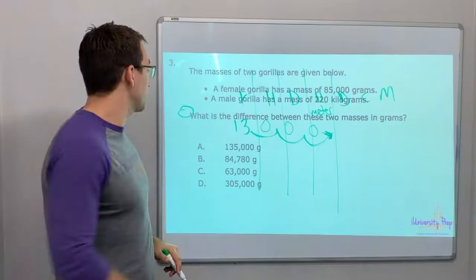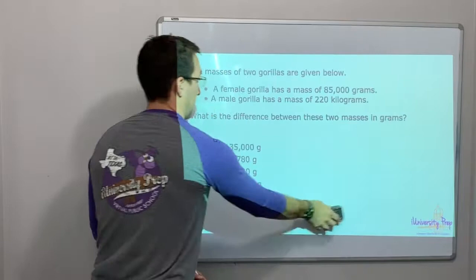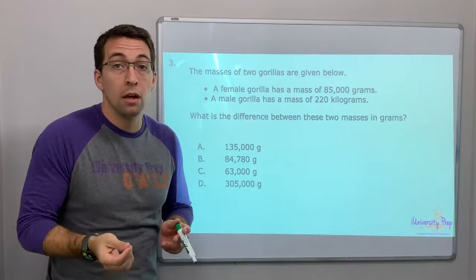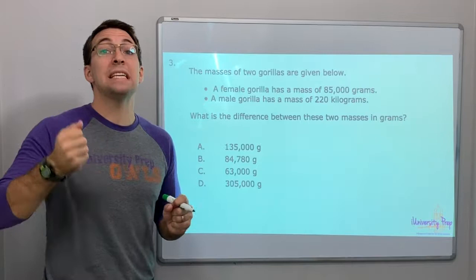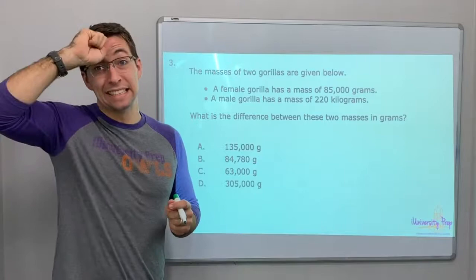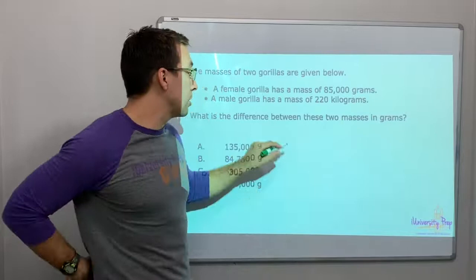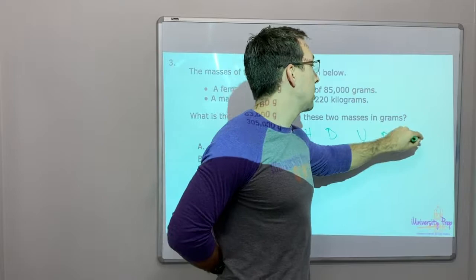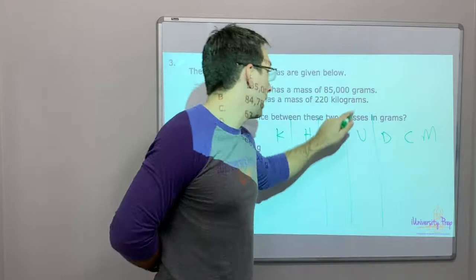The masses of two gorillas are given below. A female gorilla has a mass of 85,000 grams. A male gorilla has a mass of 220 kilograms. What is the difference between these two masses in grams? So we need to move this to grams. 220 kilograms. So let's go. King Henry died unexpectedly drinking chocolate milk.